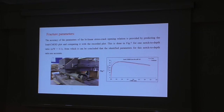The accuracy of the parameters provided in the softening relation is provided by plotting the predicted load and comparing it with the recorded load, and this is done in Figure 7 for two notch-to-depth ratios, which is 0.1, from which it can be concluded that the identified parameters for this notch-to-depth ratio are accurate.